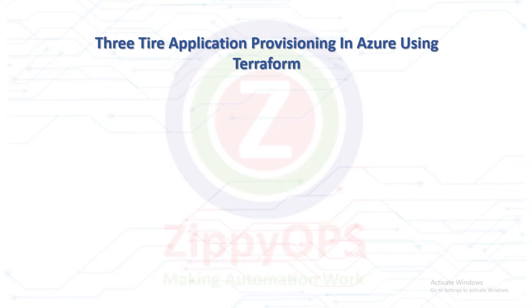Terraform will provision one public virtual machine for the web server, one private virtual machine for the app server, and one for MySQL database. The complete process is orchestrated through the Jenkins pipeline.